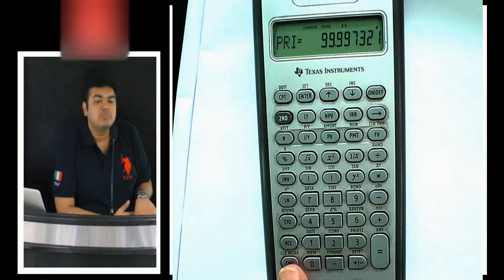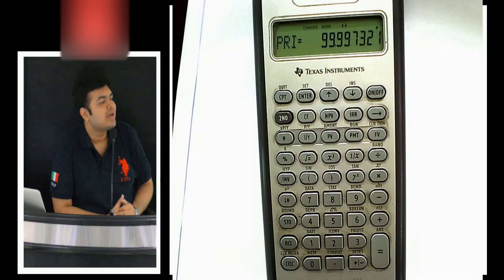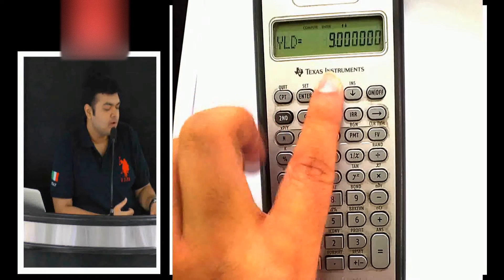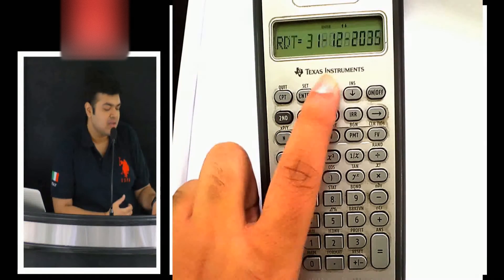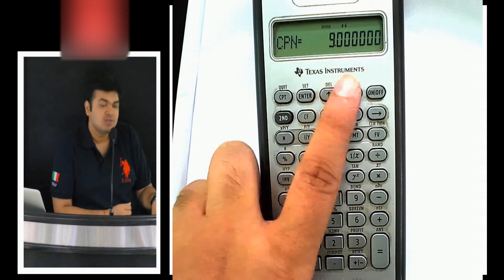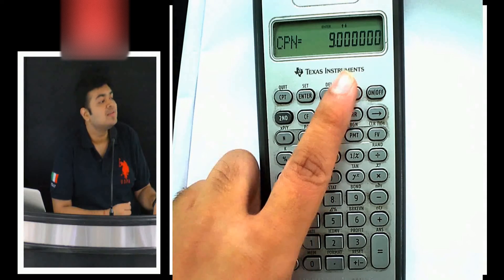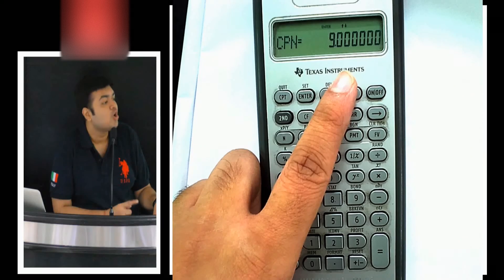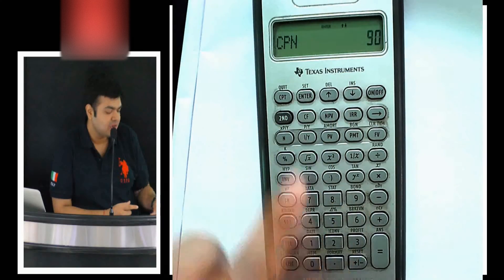I have to keep it 100. You have to keep the redemption value as 100. You have to do the calculations for a 100 par value because the coupon I entered was 9. So the coupon is 9 per annum, that is dollar 9, not percentage terms.